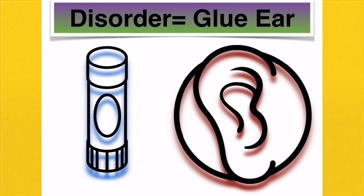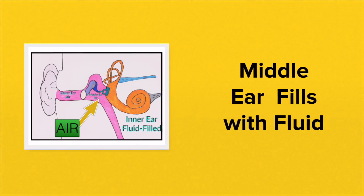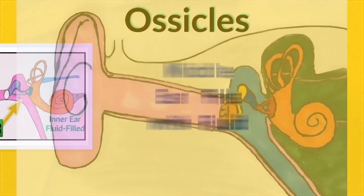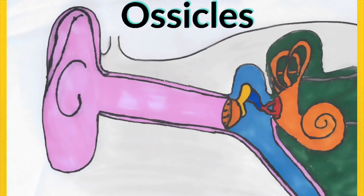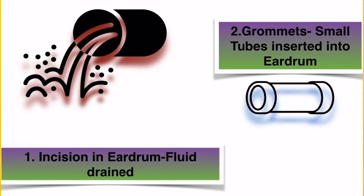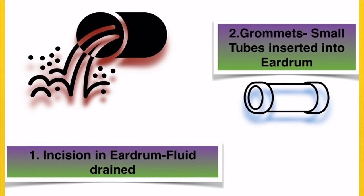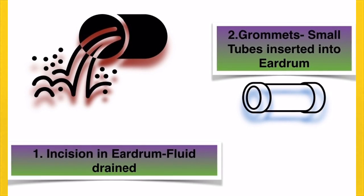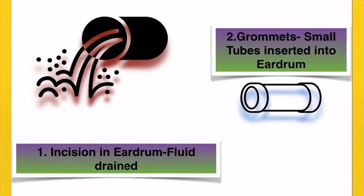You have to know one disorder of the ear, and the one we learn is glue ear. This is when the middle ear fills with fluid — instead of having air, it fills with a sticky fluid. This buildup of sticky fluid prevents those ossicles, the tiny bones, from vibrating or moving, so hearing is reduced significantly. If glue ear does not resolve on its own, medical intervention is needed: this involves an incision in the eardrum to drain the fluid and the insertion of grommets — little tubes — into the eardrum. After a while they fall out.